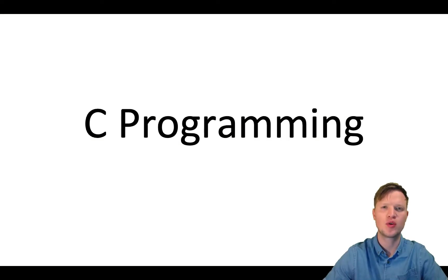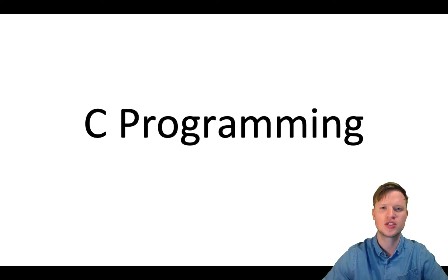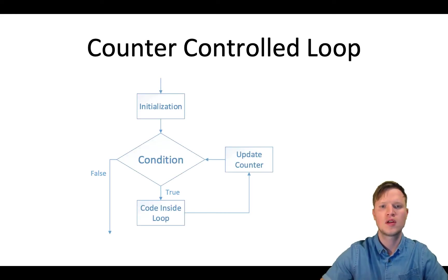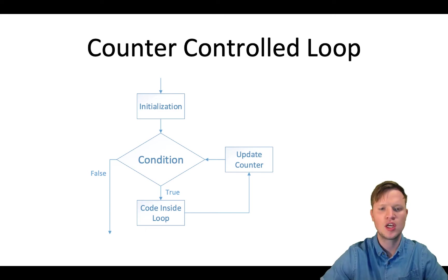Hi and welcome to C programming. In today's lesson we're going to learn how to use and implement the for loop repetition structure. Let's have a look at the for loop repetition structure flow diagram. The for loop repetition structure is based on a counter controlled loop repetition structure.